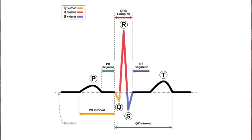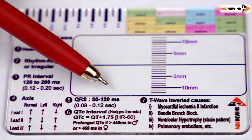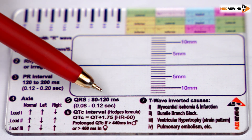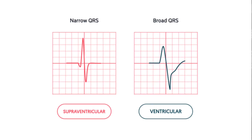Step 5 is evaluating the QRS complex. The normal duration of the QRS complex is 80 to 120 milliseconds, that is 0.08 to 0.12 seconds. By assessing the duration of the QRS complex, we can understand whether it is narrow or wide, and classify tachycardia or bradycardia into narrow complex tachycardia, wide complex tachycardia, or broad complex tachycardia.